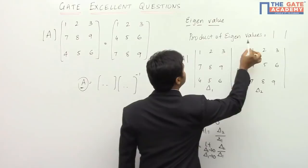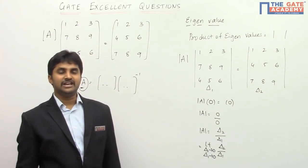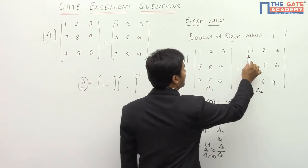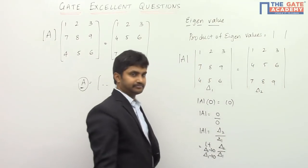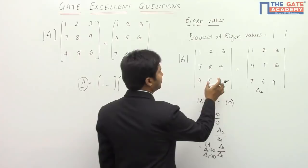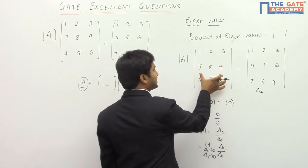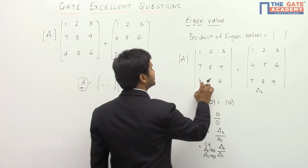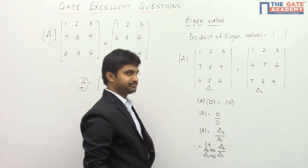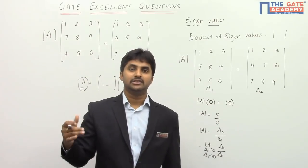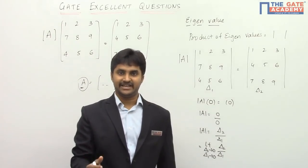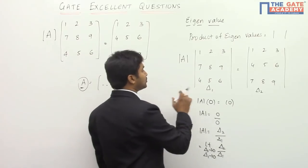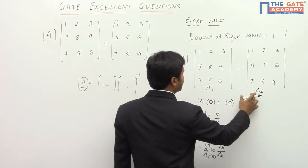Now, is there any relation between these two determinants? If you observe, matrix one has rows [1,2,3], [7,8,9], [4,5,6] and matrix two has rows [1,2,3], [4,5,6], [7,8,9]. If you interchange rows two and three of the second matrix, you get the first matrix. We can use the property of determinants that whenever two rows are interchanged, the determinant is multiplied by minus one.